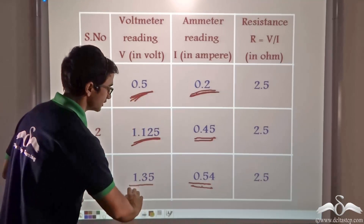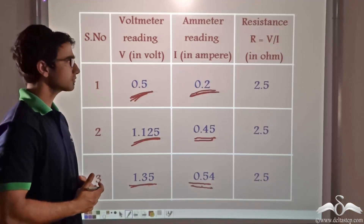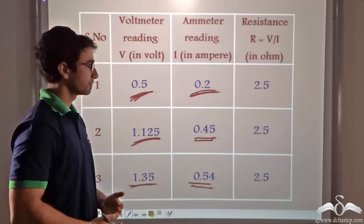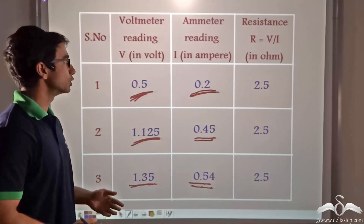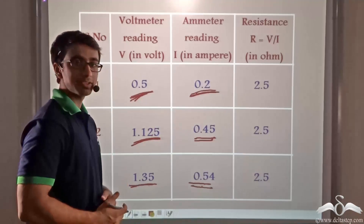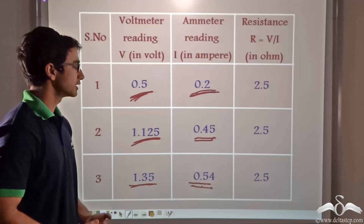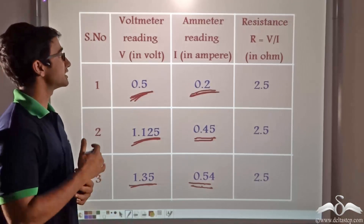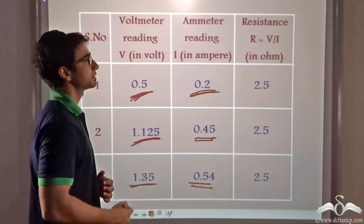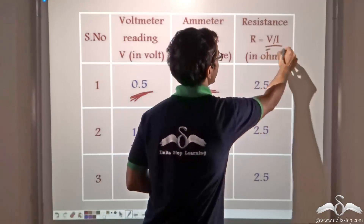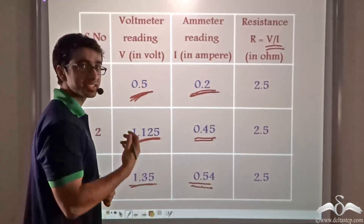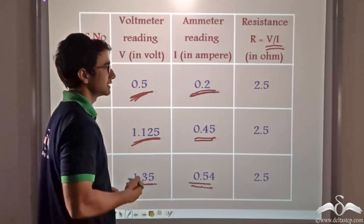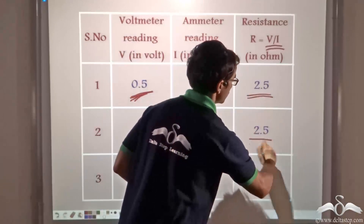Along with the increase in current, we found a simultaneous increase in the voltage across the resistor being considered. That is, for 0.5 volts we have 0.2 amperes; for 1.125 volts we have 0.45 amperes; and for 2.5 volts we have 0.54 amperes. Now if we take the ratio of V and I — that is, if we perform V divided by I — we see that this ratio is constant for all three sets of readings.